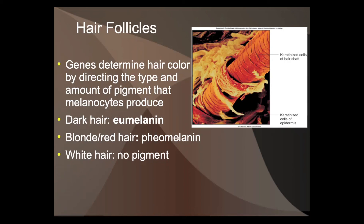Gray hair comes from cells not being able to produce enough pigment — you have fewer melanocytes, or they die off and can't produce pigment. This can be due to genes turning off as you get older, environmental changes, cancer, or stress turning off those melanocytes.